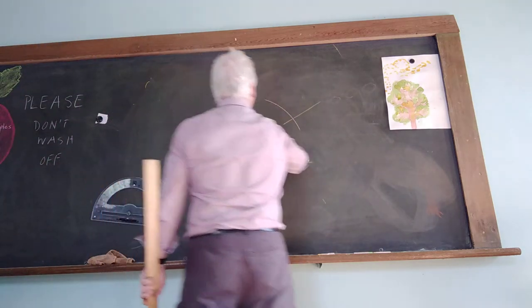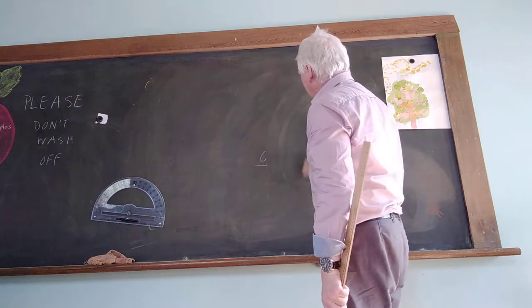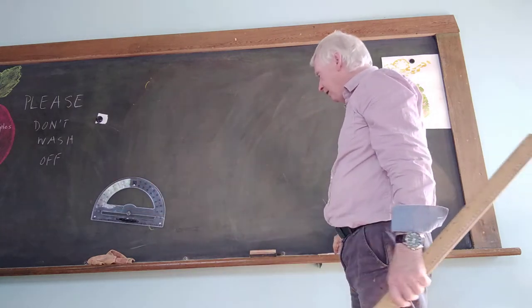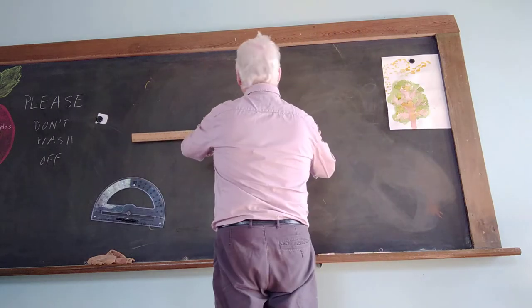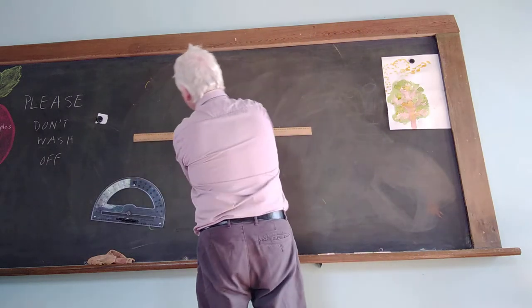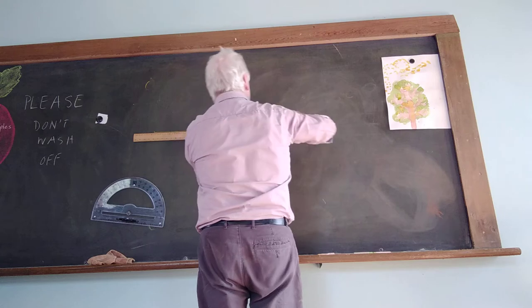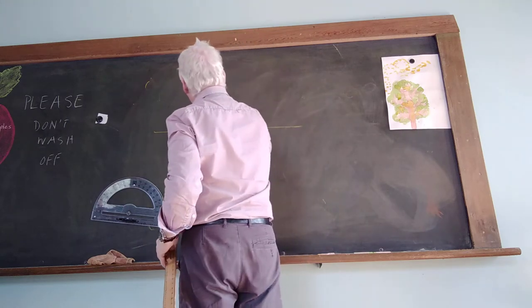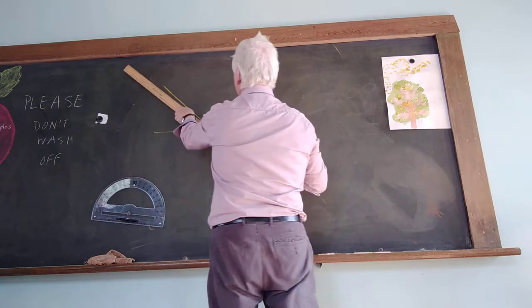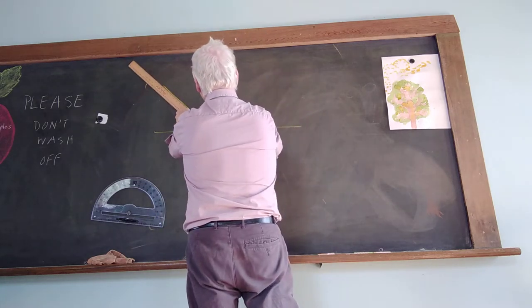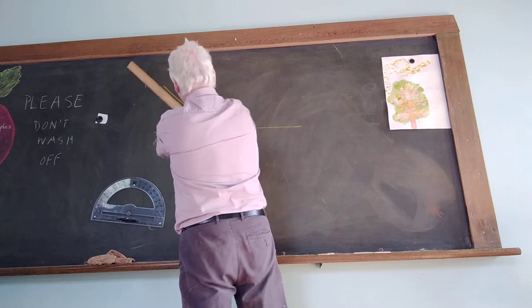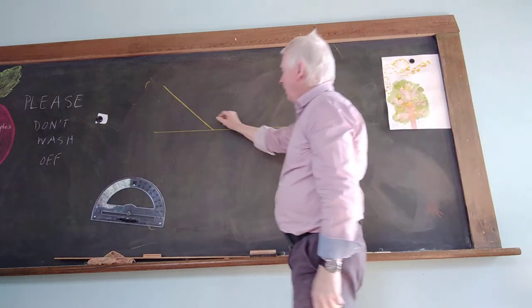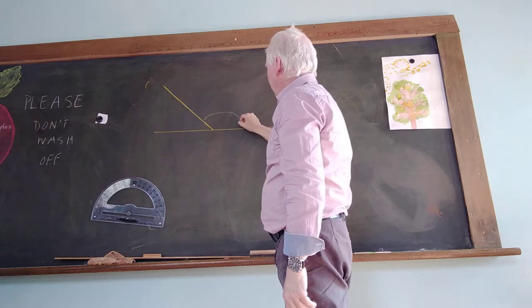This time I'll do an obtuse angle. Of course, an obtuse angle is bigger than 90 degrees, but not greater than 180 degrees or a straight line. So obtuse means wide or fat or thick. And I'm going to use my straight edge to make it straight. Now, let's have a look. I have got an obtuse angle.